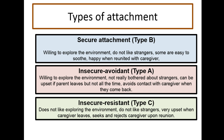The second type of insecure attachment is insecure resistant. These children don't really like exploring the environment and they're not really comfortable with strangers either. However, when a caregiver leaves them, they do get quite upset. But when the caregiver comes back, they can sometimes reject them, sometimes seek them, or sometimes do both — seeking and rejecting. It's very shaky with these type of children.